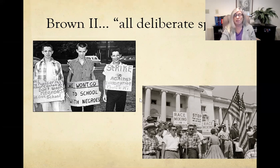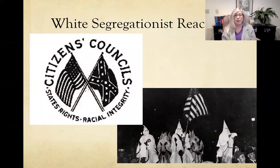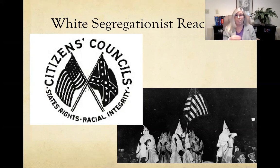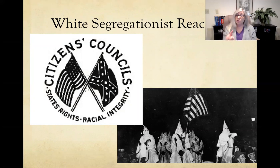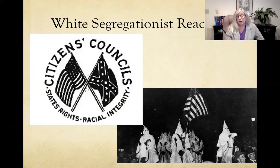White supremacist organizations tried to prevent integration. White citizens councils promoted states' rights and 'racial integrity' through local policy decisions. Additionally, this was the third spike in KKK membership — the first during Reconstruction in the 1860s, the second in the 1920s driven partly by anti-immigration sentiment, and now a third spike directly in response to the Brown v. Board ruling and the mandated integration it produced.